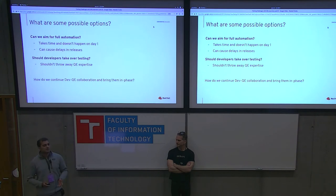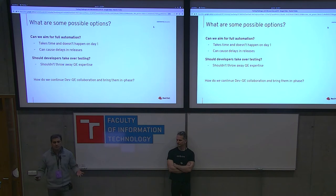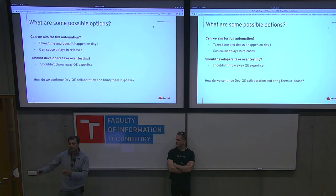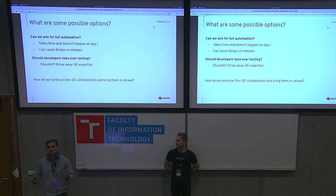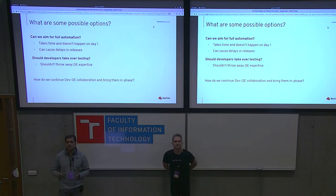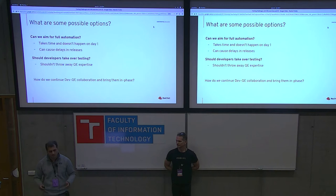So what are some possible options? Can we aim for full automation testing? That's a good idea, but it takes time and doesn't happen on day one. When building a new service based on microservices from scratch, the general idea is to first build and then focus on quality. Your first target is to have some functionality in place, go for alpha and beta testing with internal users. Quality is not a focus from day one. And even if you specifically make full automation a focus on day one, that will just get you delayed releases, missed deadlines, and risk going to market.